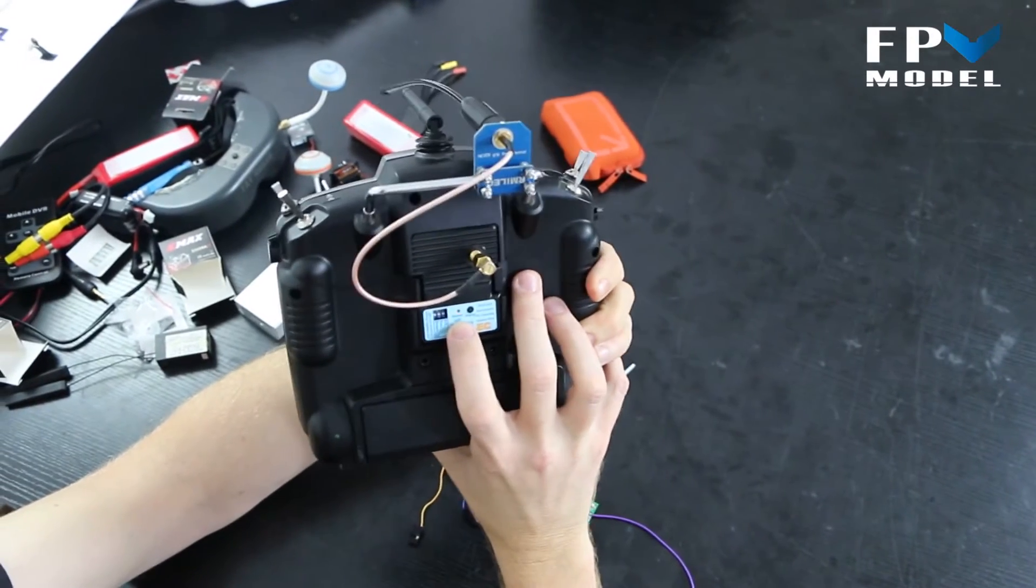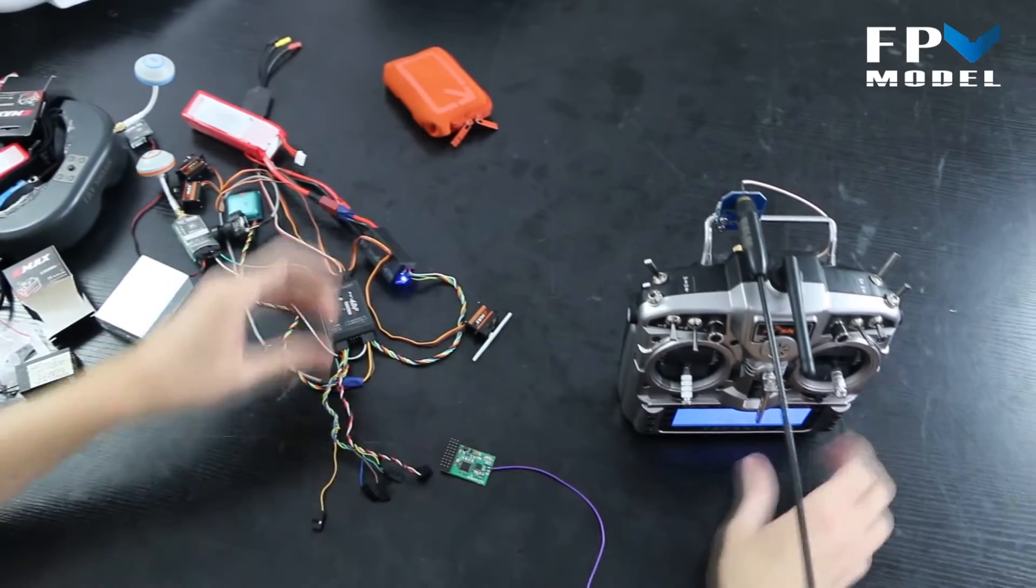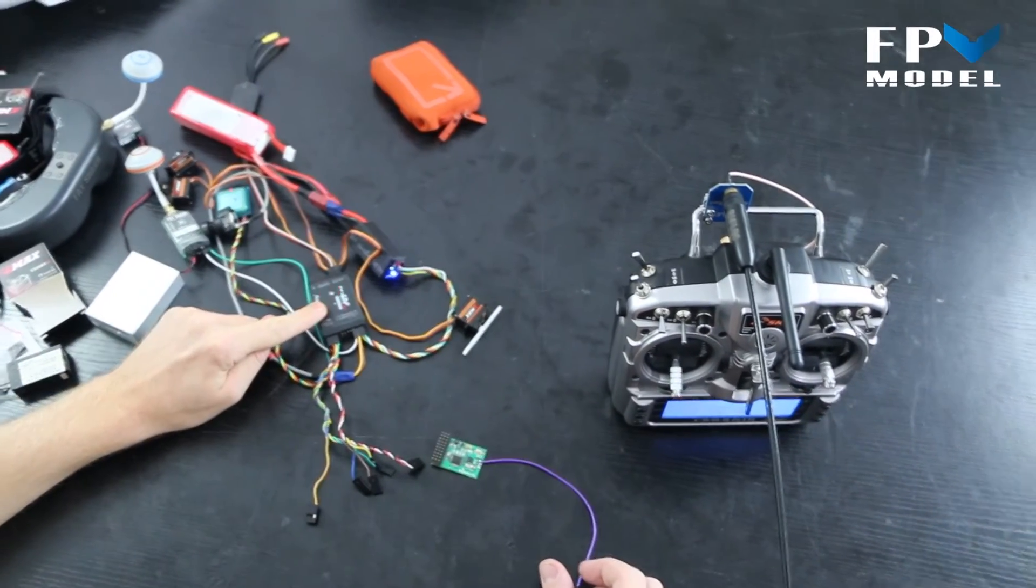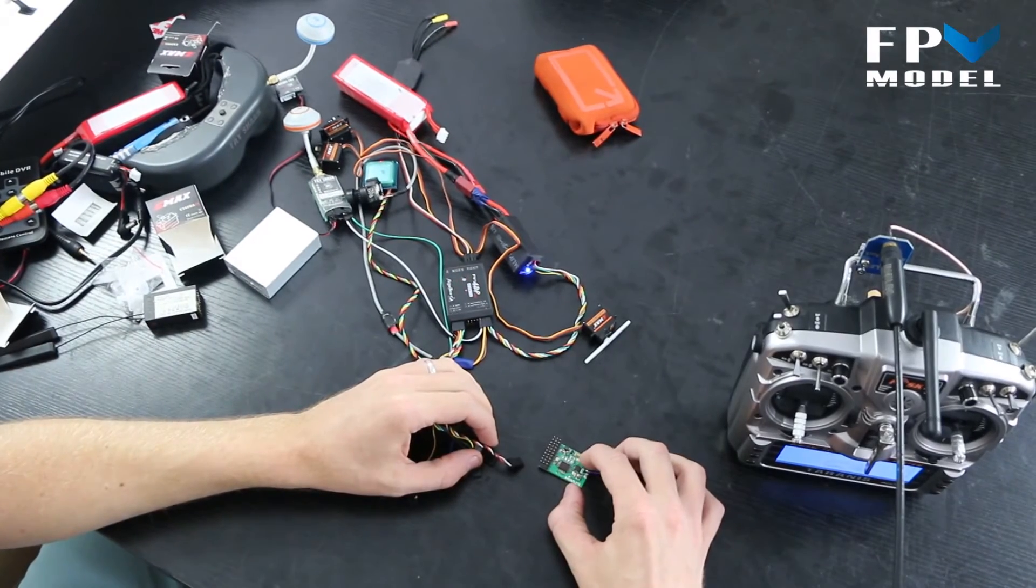When you see the light flashing, the transmitter is ready to bind with the receiver. Now I already have the power connected to my power source, so what I'm going to do is press the button down on the receiver.